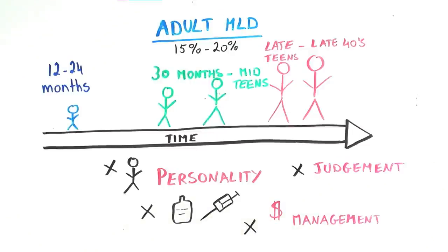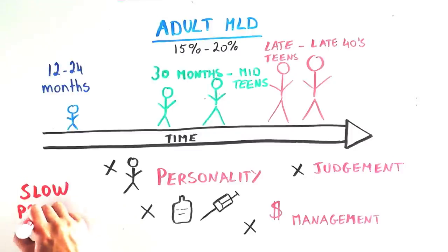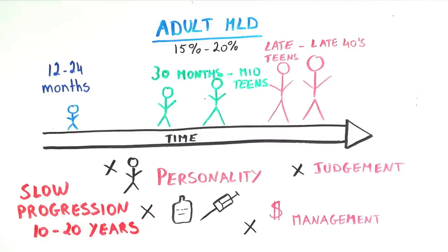forgetfulness and poor judgment, among others. These symptoms can develop slowly over 10-20 years before the disease advances severely.